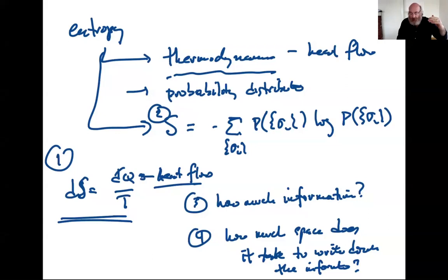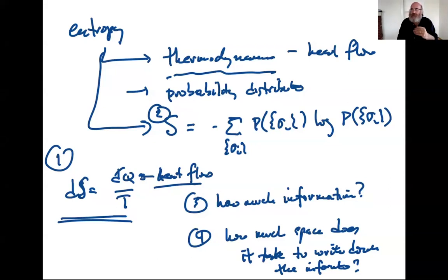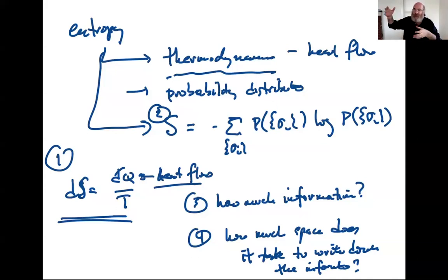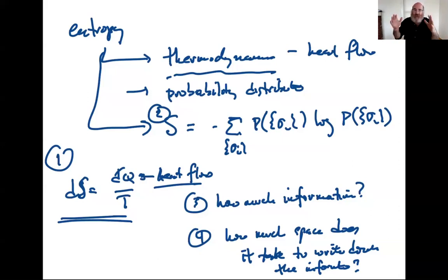An important point: you do not assume that every microstate has the same probability. In fact, in the Boltzmann distribution they don't - the microstates of the universe all have the same probability, but the microstates of the system you're looking at don't, because the system is exchanging energy with a bath around it. Entropy arises as the answer to independent questions, but it always turns out to be the same answer, which is kind of mysterious and a very fundamental fact about the mathematical structure of physics.